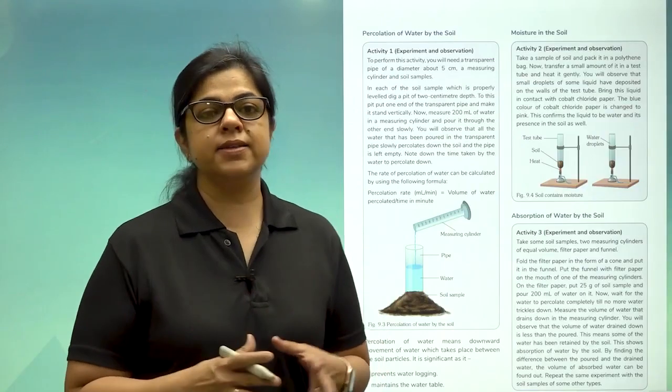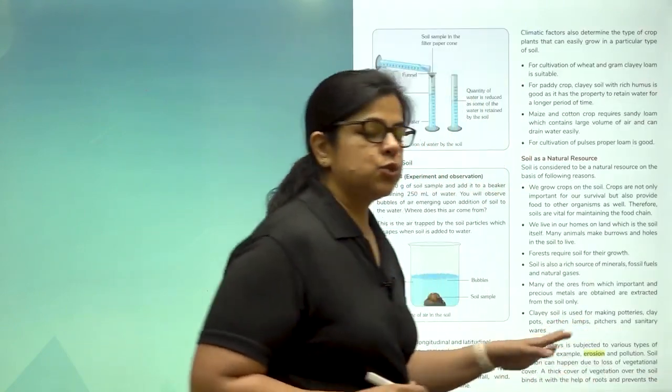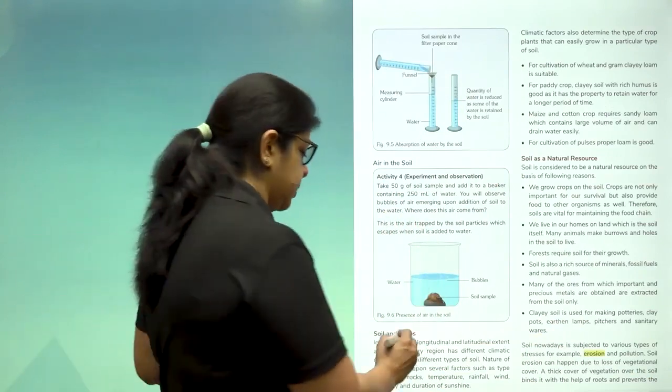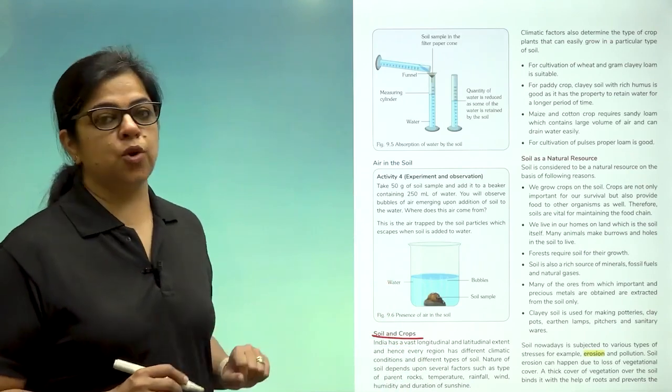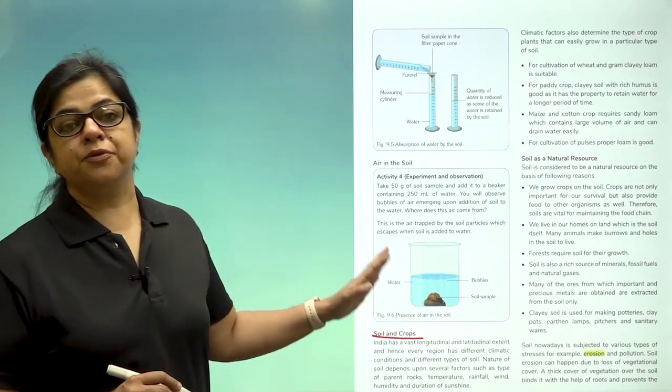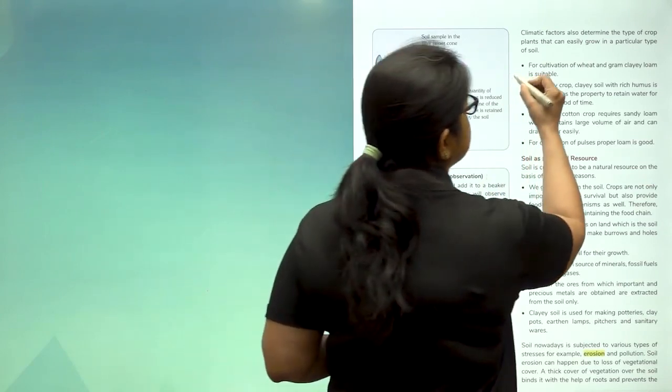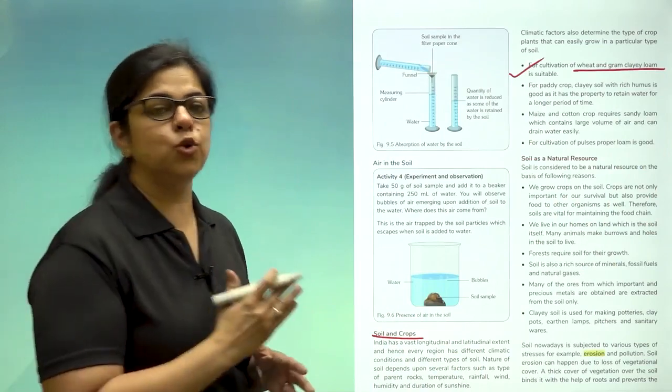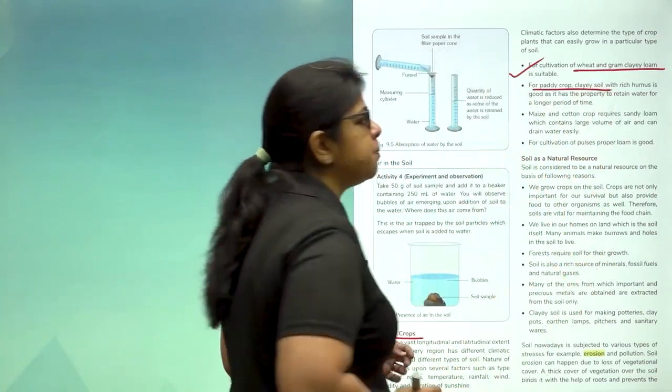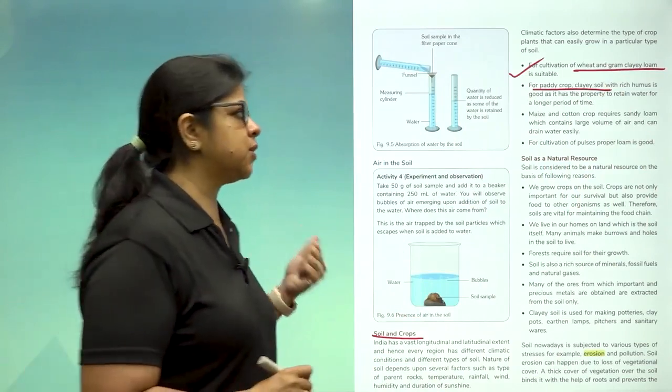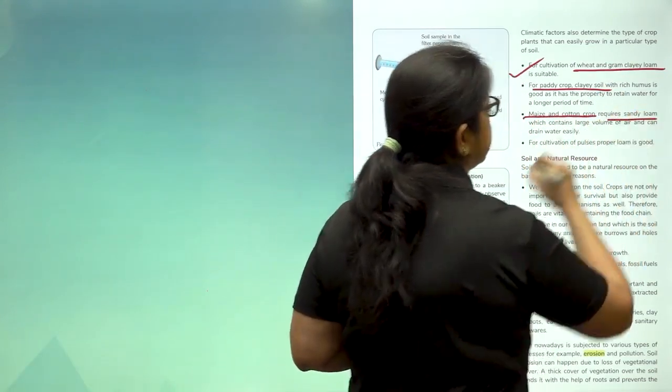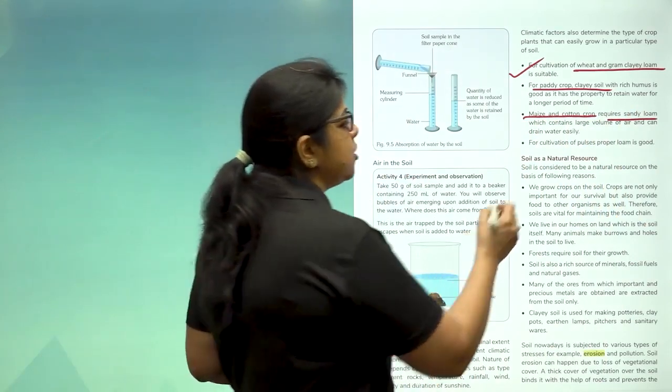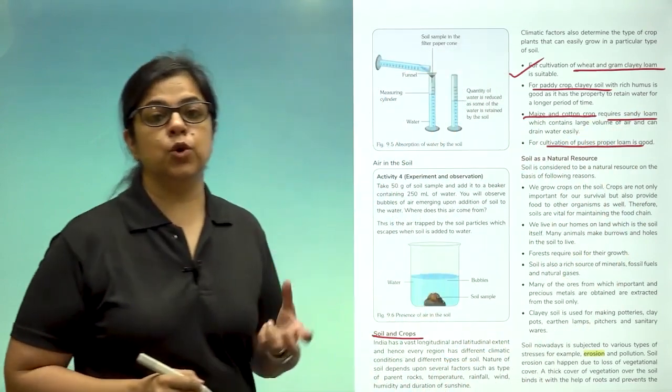Through these experiments, we understand the different properties of soil. Now as responsible individuals, we know that why soil is important. Soil is important for growing crops. Different types of crops require different types of soil. For cultivation of wheat and gram, you require a mixture of clay and loamy soil. For paddy crop, clay soil which is rich in humus is required. For maize and cotton crop, because they require less water, we need sandy soil. And for pulses, we need good loam soil.